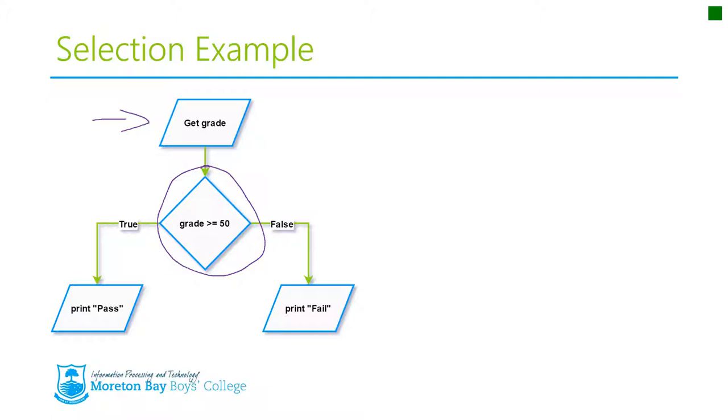Now this diamond is called a conditional or the condition. What it means is you test a particular value. In this case, we're testing the grade that has been entered and determining whether it meets a particular condition. That condition is whether it is greater than or equal to 50.